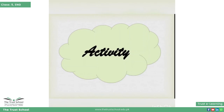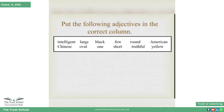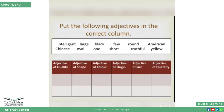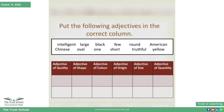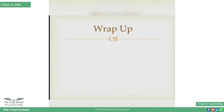Dear students, there is an interesting activity which you are going to do in your books. You are going to identify different types of adjectives — adjectives of quality, shape, color, origin, size, and quantity.